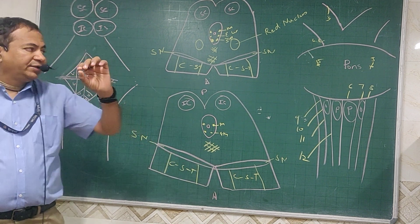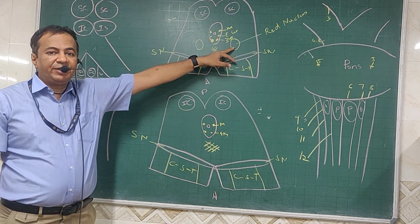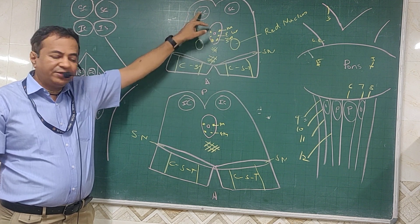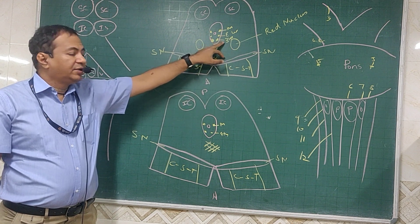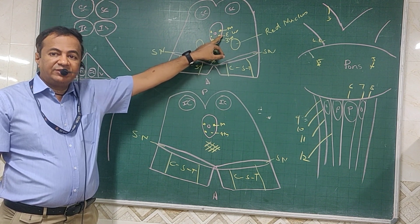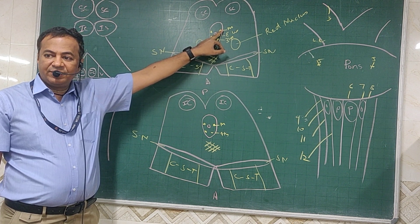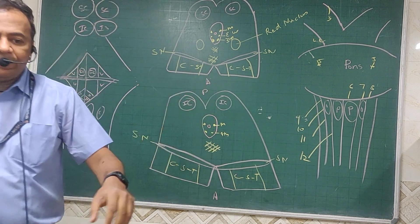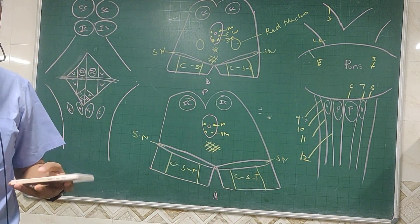The grey matter seen in the midbrain includes: the superior colliculus, the red nucleus, the third cranial nerve nucleus, and the substantia nigra — all are grey matter.